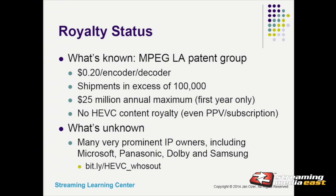On the royalty status: MPEG-LA came out with a projection of what they think the royalty will be — this is a framework, not a final royalty. For people who don't know, MPEG-LA tries to get all patent holders into a group and present one royalty so that if ESPN wants to license HEVC, they only have to write one check per year. What they said in January was they don't have everybody in the group yet, so they can tell you what they plan to charge, but they can't tell you what others will charge or how many checks you'll have to write.